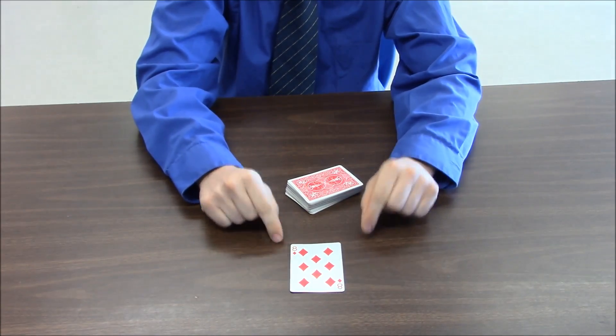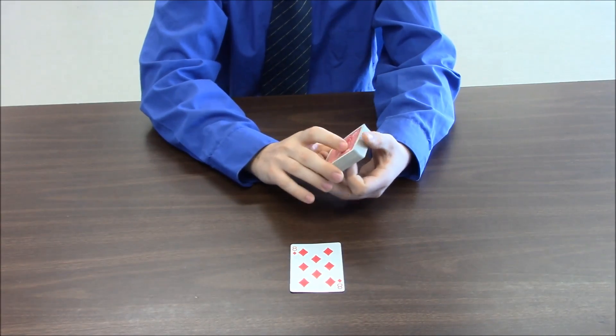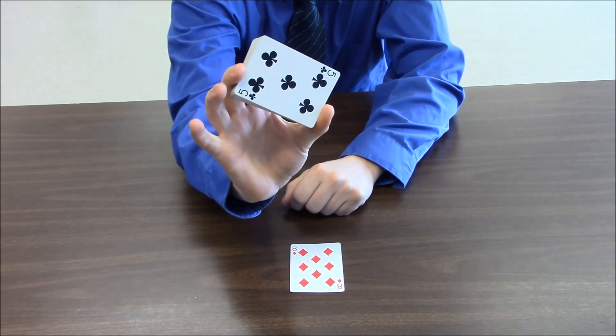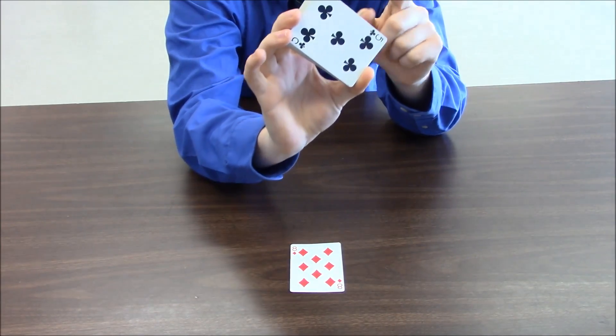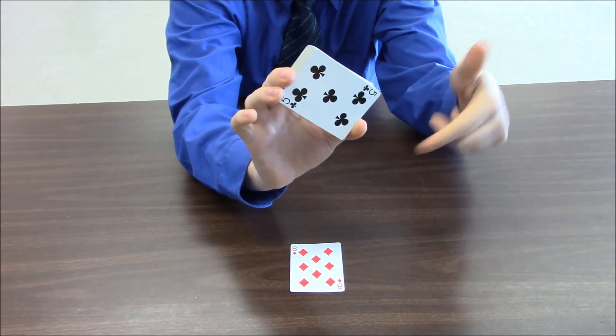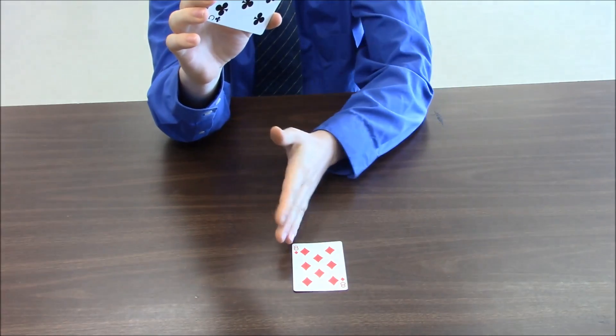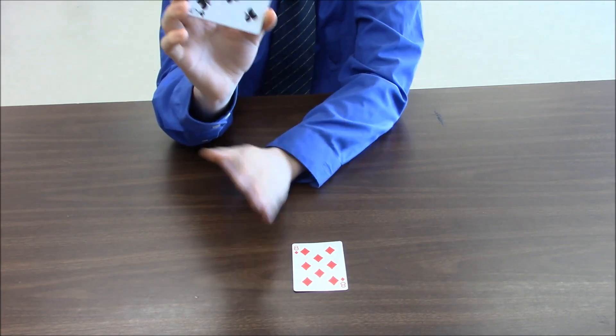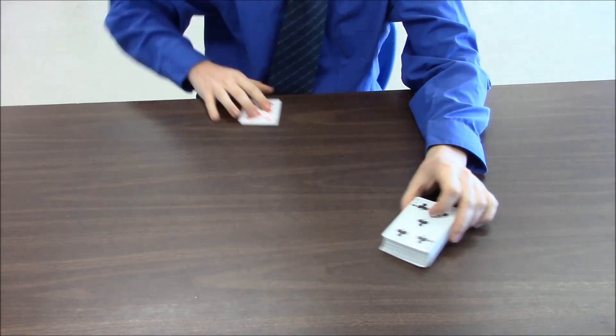So now the way that I was able to do that was by looking at the bottom card. It was five of clubs. So I do the bottom card plus three. So bottom card plus three got me to eight. And then with the suit, the order is spades, hearts, clubs, diamonds. So if it's clubs, the next one is diamonds. So that's how I knew that this was the eight of diamonds.